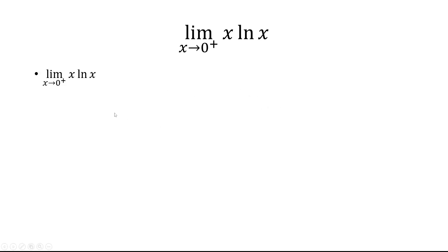I can rewrite this because right now if I plug in 0, I have 0, and then we know ln of x looks like this. So as we're approaching 0 from the right, that's going to be negative infinity.